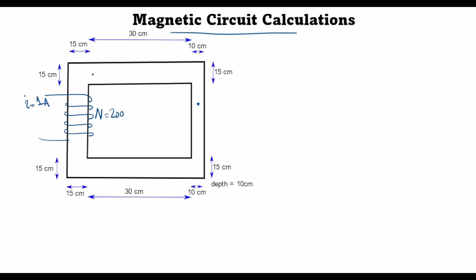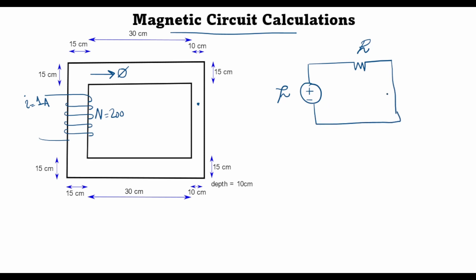Due to this current, we are interested in finding the magnetic flux that flows through the core. In my previous lecture, I introduced the concept of a magnetic circuit, very similar to an electrical circuit, where a magnetomotive force F replaces the electromotive force, reluctance R replaces resistance, and flux phi flows through the circuit instead of current. Today we'll make a magnetic equivalent circuit of this core and find the reluctance and flux.